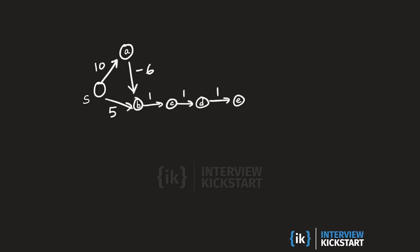Notice that there is one edge with weight minus 6 in this graph. If we start building the shortest path tree from the source s, the source s itself is at a shortest path distance of 0 from itself. Then we look at its two neighbors a and b, which are at tentative distances of 10 and 5 from s.